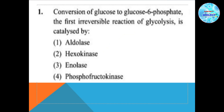Question 1: Conversion of glucose to glucose-6-phosphate, the first irreversible reaction of glycolysis, is catalyzed by — option 1: DRS, option 2: hexokinase, option 3: enolase, option 4: phosphofructokinase.